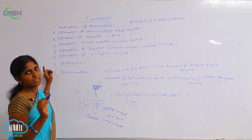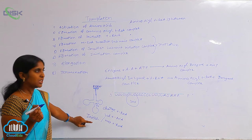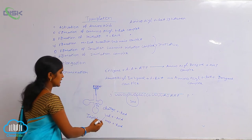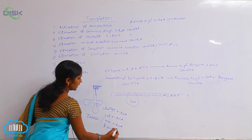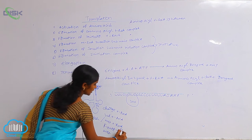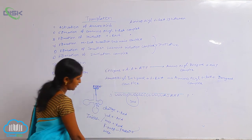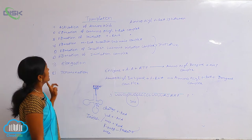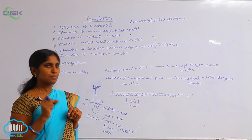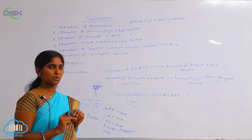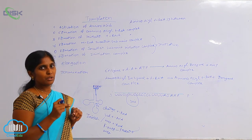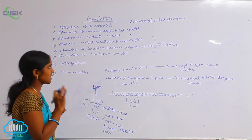Next is the formation of initiator tRNA. The initiator tRNA means methionine tRNA. In prokaryotes it is formyl methionine (F-Met), and in eukaryotes it is normal methionine. The first three steps — activation of amino acids and formation of amino acyl tRNA — are completed, and then the tRNA carries the amino acids towards the ribosomes for the translation procedure.